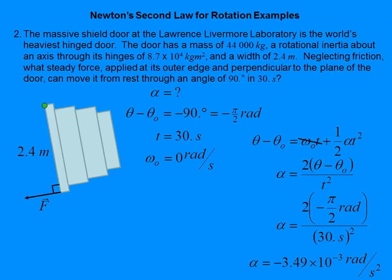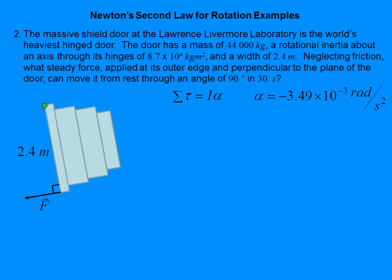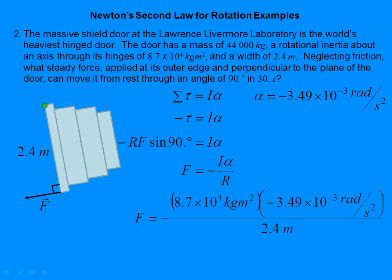Now we know the angular acceleration, so we can go back and find the torque, and from the torque find the force. There's only one torque — a clockwise torque, which is negative. The torque is RF sine θ, but θ is 90 so sine is 1. Solving for F gives −Iα/R. The two negatives cancel, and we get a force of 130 newtons, which is about 28 pounds.